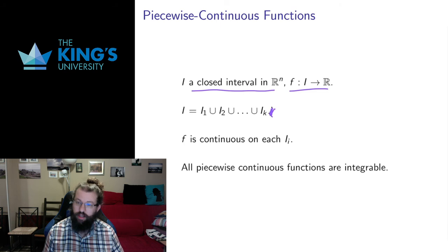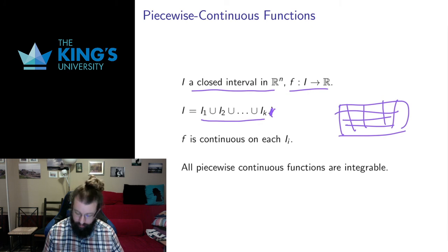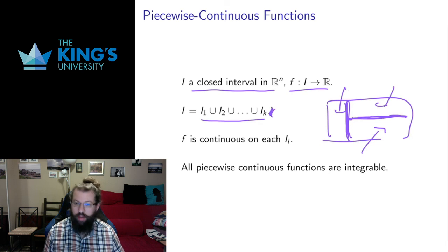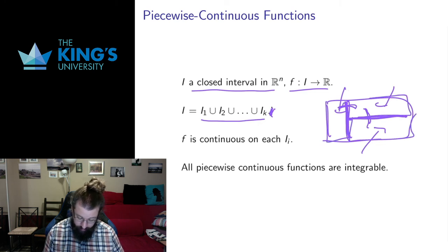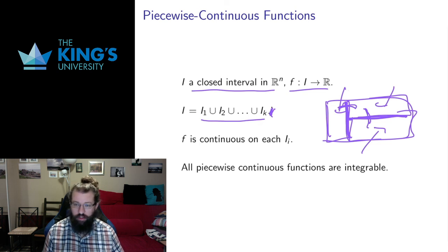Let me remind you what a piecewise continuous function is on an interval. Say I have a closed interval and a function on that interval to the real numbers. I can split that interval into a number of subintervals — say one, two, and three pieces. If f is continuous in each of those pieces but may be discontinuous on the boundaries where they meet, then it's called piecewise continuous. It may have a jump here or there, but on each piece it's continuous. Piecewise continuous functions are always integrable, so working with this class is sufficient for all the properties in this course.